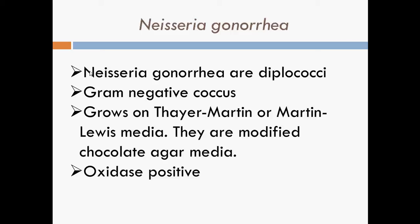The first bacteria under this genus that we are going to look at is Neisseria gonorrhoeae. They are diplococci and gram-negative cocci, and they also grow on Thayer-Martin media, which is actually modified chocolate agar media. Thayer-Martin media is a Muller-Hinton agar with 5% sheep blood and antibiotics. It is selective for Neisseria gonorrhoeae by suppressing most other gram-negative diplococci, gram-negative bacilli, gram-positive species, as well as yeast.